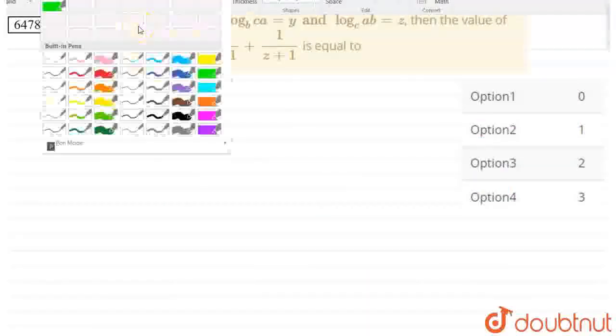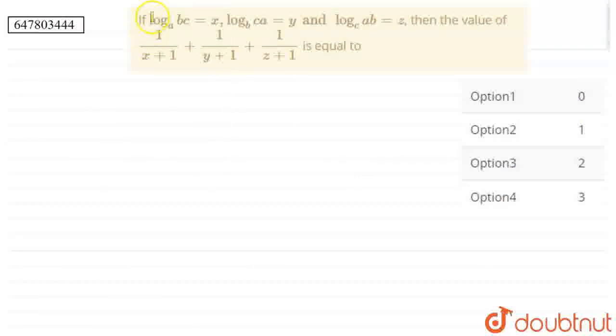Okay, hello guys. Let's see what we have. If log base a of b,c is equal to x and log base b of c,a is equal to y and log base c of a,b is equal to z,